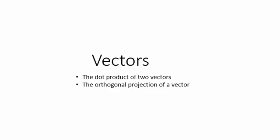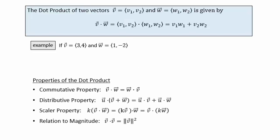In this video we're going to look at the dot product of two vectors and the orthogonal projection of a vector. The dot product: given two vectors v and w, the dot product is denoted with a little dot between them. It's calculated by looking at the product of the x components plus the product of the y components. Notice that what we get back will be a scalar — a number. For this reason it is sometimes referred to as a scalar product.